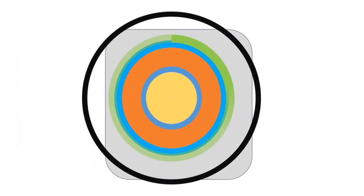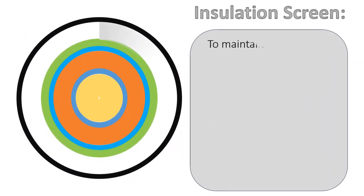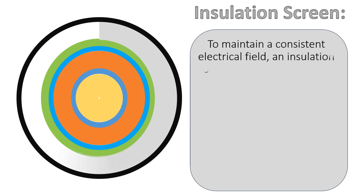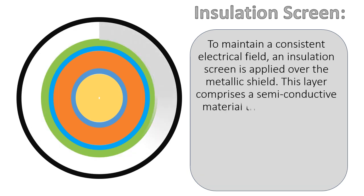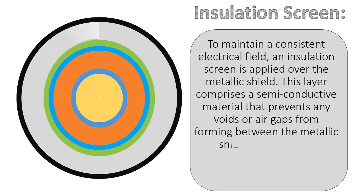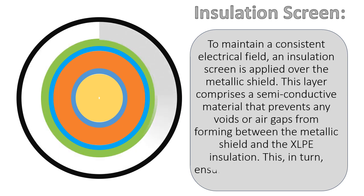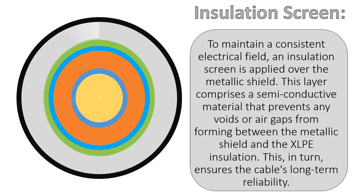Insulation screen: To maintain a consistent electrical field, an insulation screen is applied over the metallic shield. This layer comprises a semi-conductive material that prevents any voids or air gaps from forming between the metallic shield and the XLPE insulation. This, in turn, ensures the cable's long-term reliability.